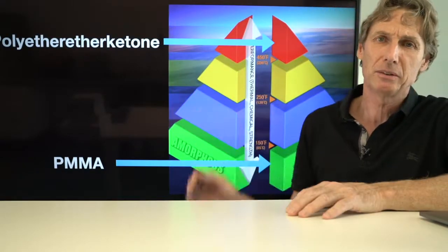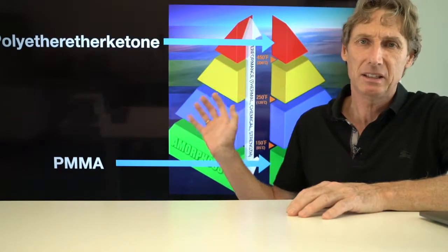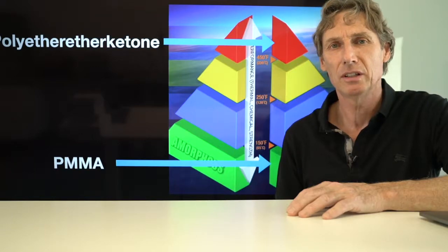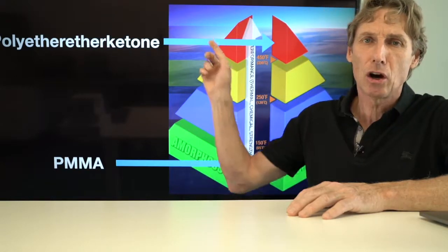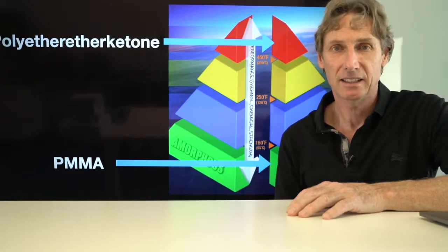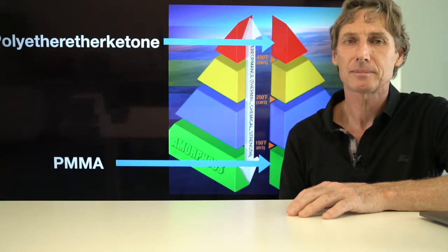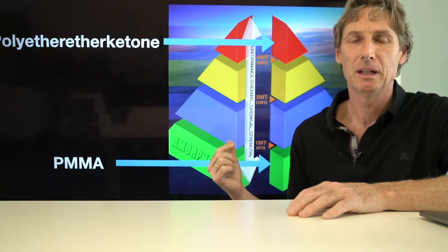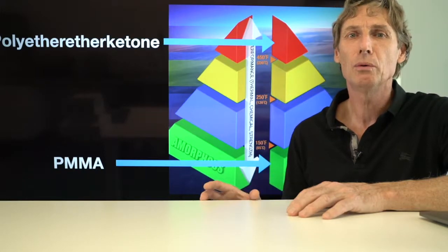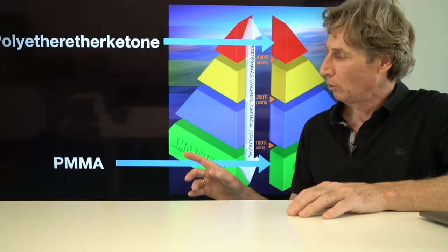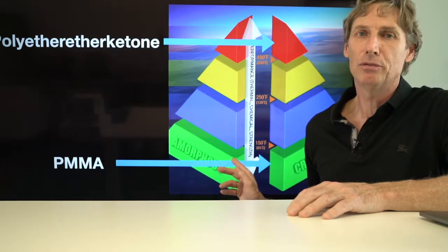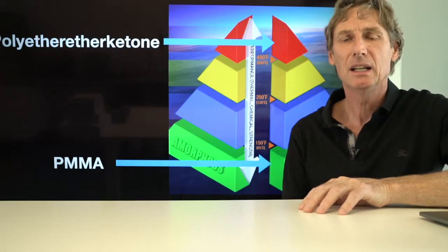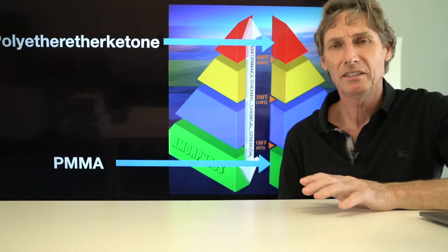Here in this pyramid you can see different plastic materials. At the bottom we have PMMA, that we use for acrylic dentures, and at the top we have Poly-Ether-Ether-Ketone, the PEEK material. In this pyramid diagram we can distinguish two groups of plastic materials: the amorphous group and the crystalline group. PEEK is a crystalline material.